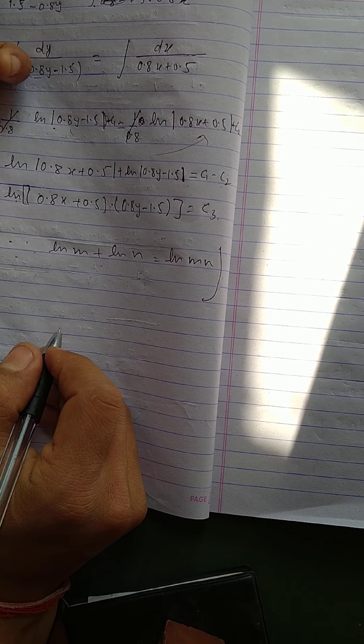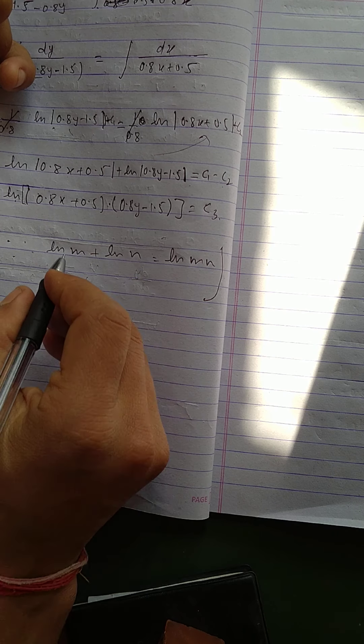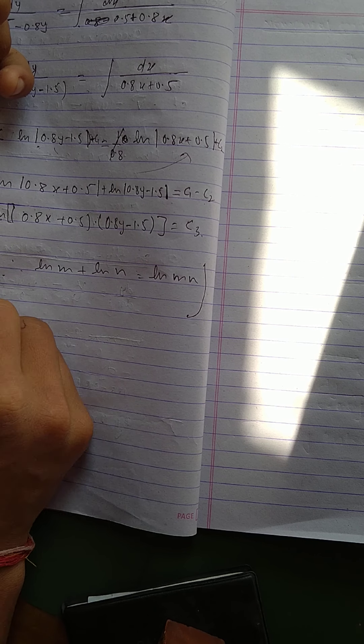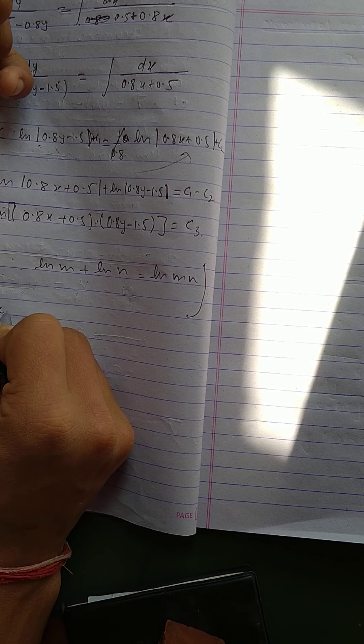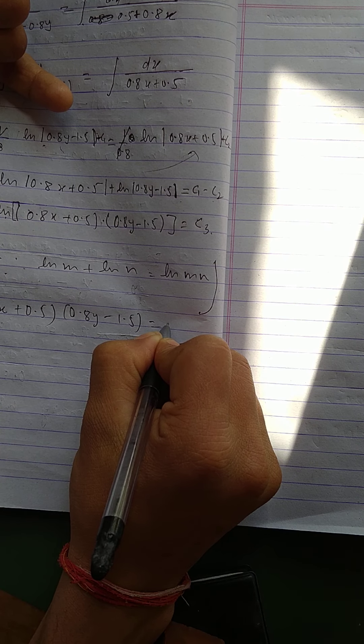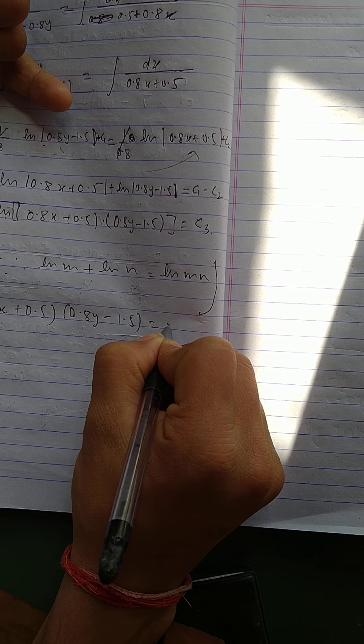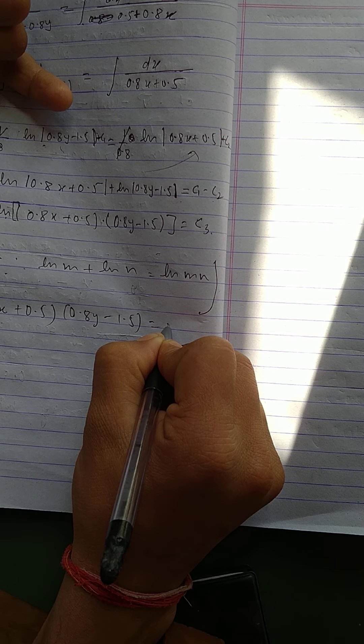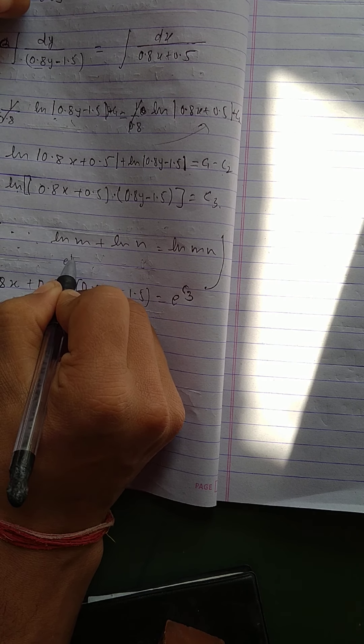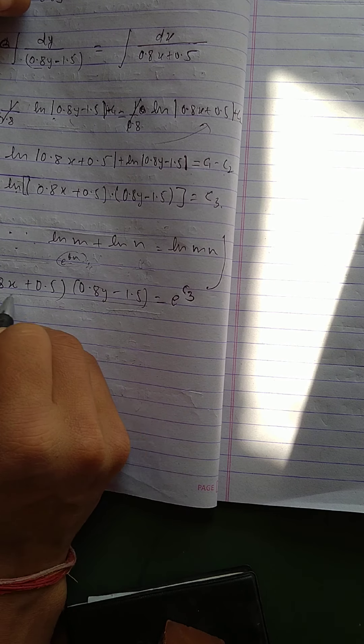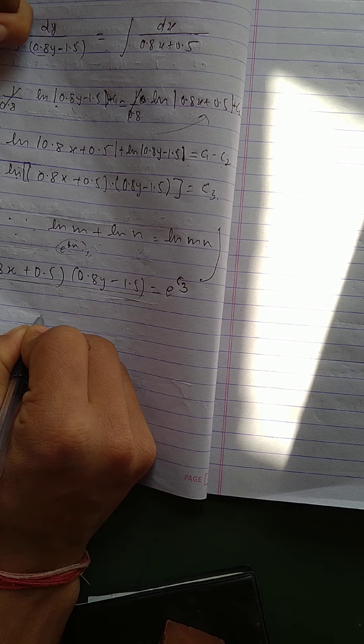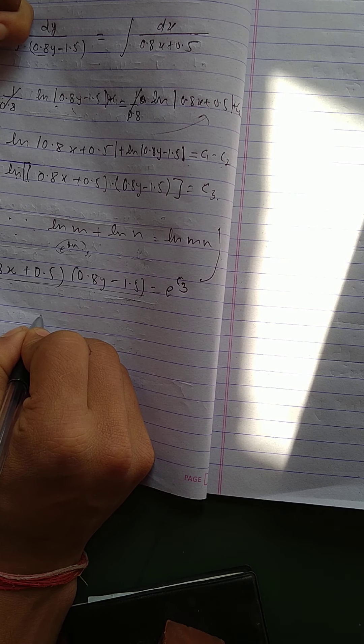Now I will take the anti log. Anti log then 0.8x plus 0.5 times 0.8y minus 1.5 equals e power c3. After taking anti log, e power ln will become 1, so it will give us this coefficient only.